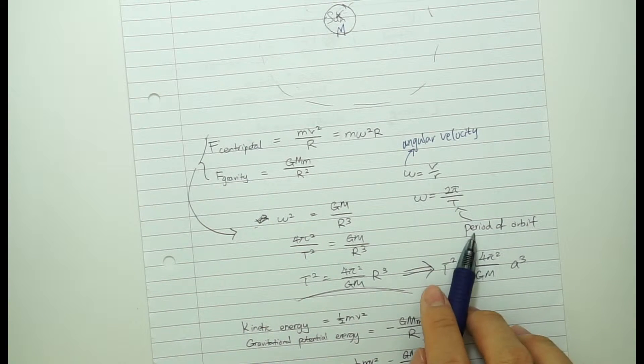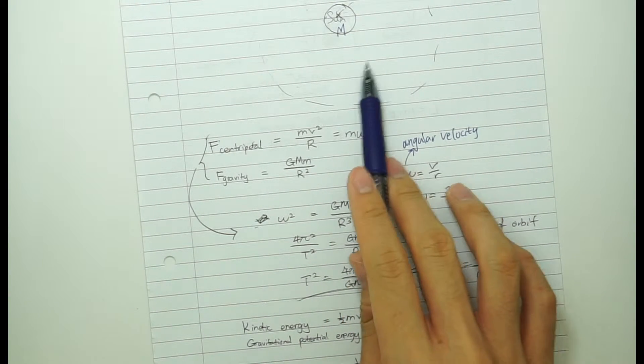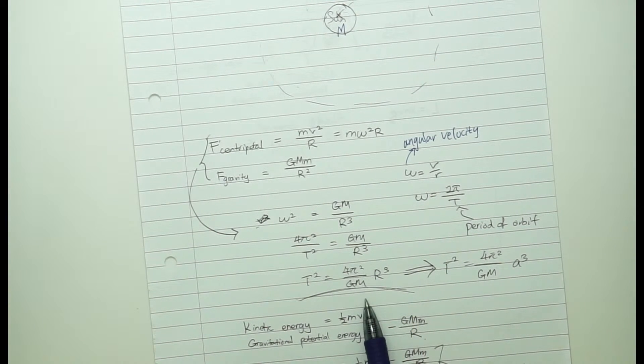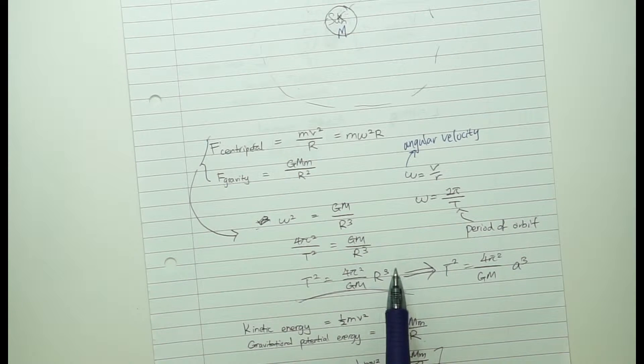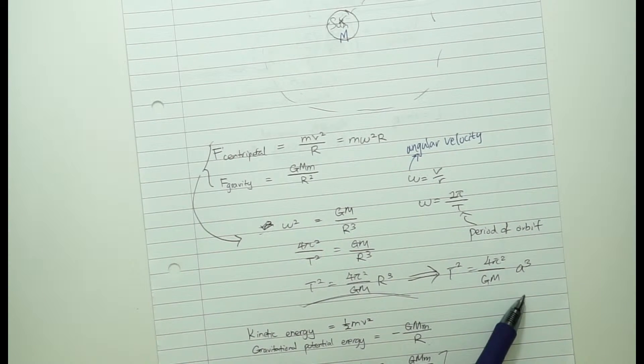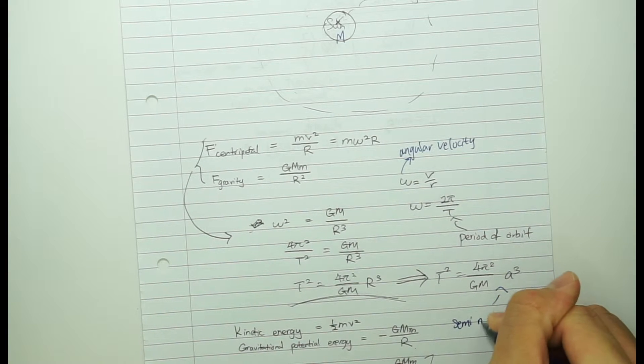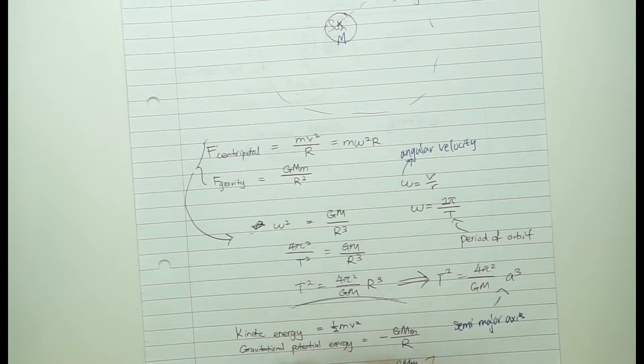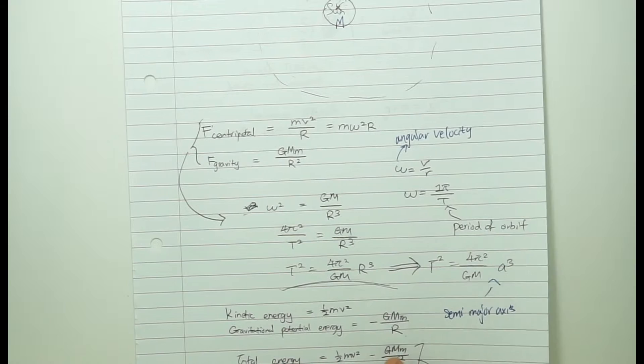So you have these equations: mv squared over r and m omega squared over r. Omega is simply v over r where omega is equal to angular velocity. And also, omega equals to 2 pi over t, while t is the period of the orbit. So if you equate these two together, this is assuming circular orbits, you can rearrange it to get Kepler's third law.